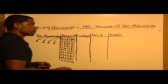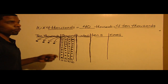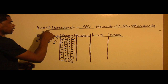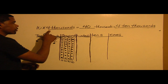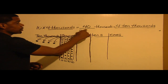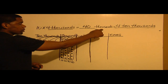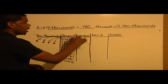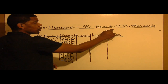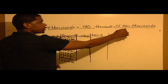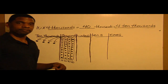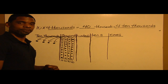Finalizing my equation: 10 times 4,000 is equal to 40,000, and 40,000 is equal to 4 ten-thousands. Thank you.